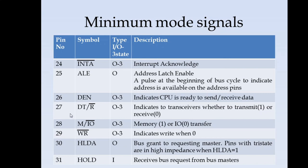Next pin number 27 is DT slash R. It indicates to the transceivers whether to transmit or receive. Pin number 28 is M/IO which is used to differentiate between a memory transfer and an IO transfer. If this pin is high it indicates a memory transfer.